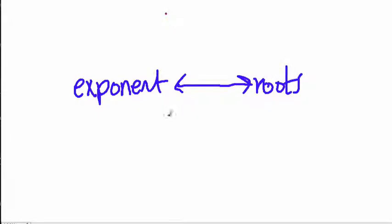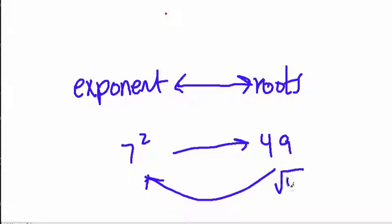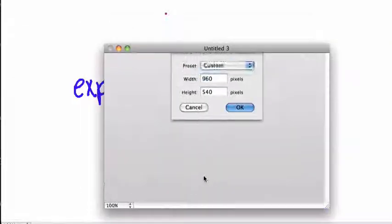When you take an exponent of 2, like 7 squared, we get 49. But to take 49 and get back to 7, we find the square root of 49. And we can keep going in this loop, in this pattern of exponents and roots.